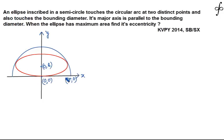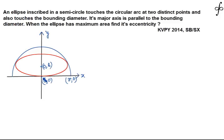I have taken the origin to be at the point where the ellipse touches the bounding diameter. This is the x-axis and naturally the y-axis. The semi-minor axis length is B and the semi-major axis length is A. So the center of the ellipse is at (0, B), the center of the circle is at (0, 0), the radius is R, and the point (R, 0) is on the circle.